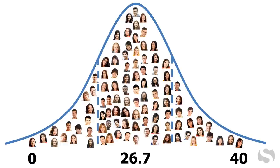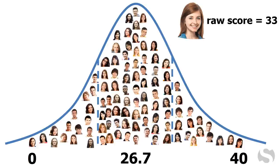Standard scores are computed by taking the points the test taker earns, called a raw score, and comparing them to the performances of same-age peers from the norming sample. For example, Jessie takes the math test and gets a raw score of 33. Now 33 out of 40 may not seem too impressive, but considering that the mean of the norming sample was 26.7, and that she performed better than the majority of other 16 year olds, Jessie actually did pretty well, so she would earn a strong standard score.